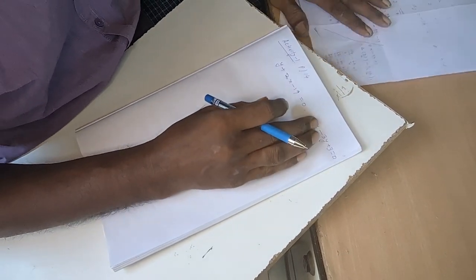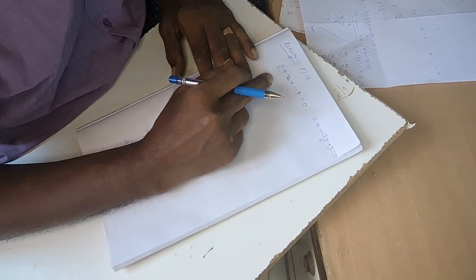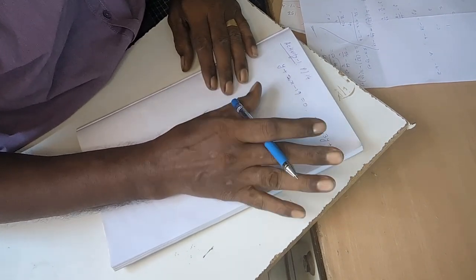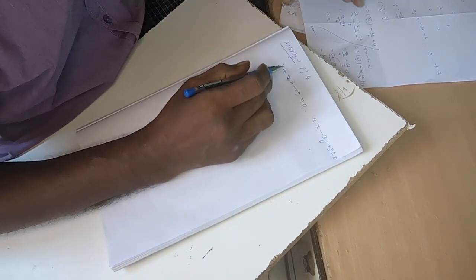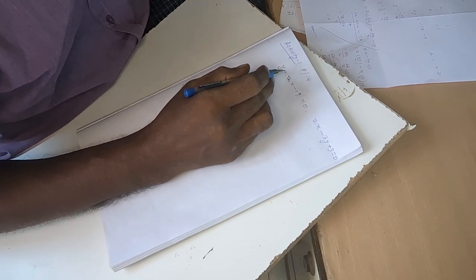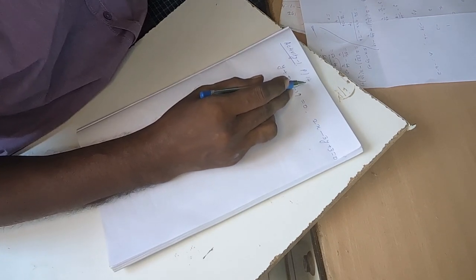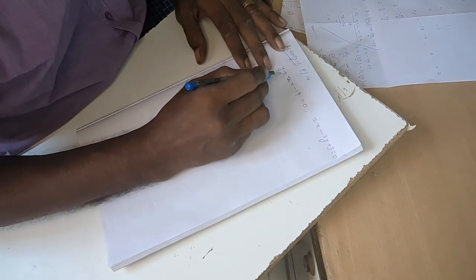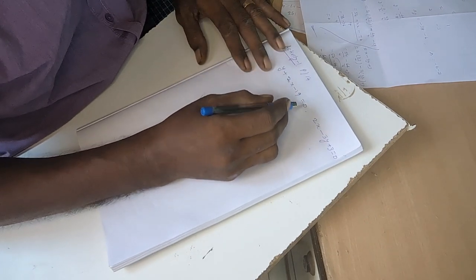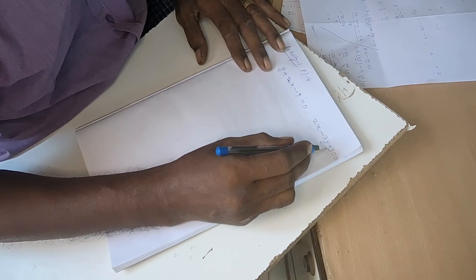Good morning friends. Now we solve linear equations by Cramer's rule method. This is the problem from the Maharashtra State Board 10th standard book, activity 1, found on page number 14. The problem is y plus 2x minus 19 equal to 0 and 2x minus 3y plus 3 equal to 0.